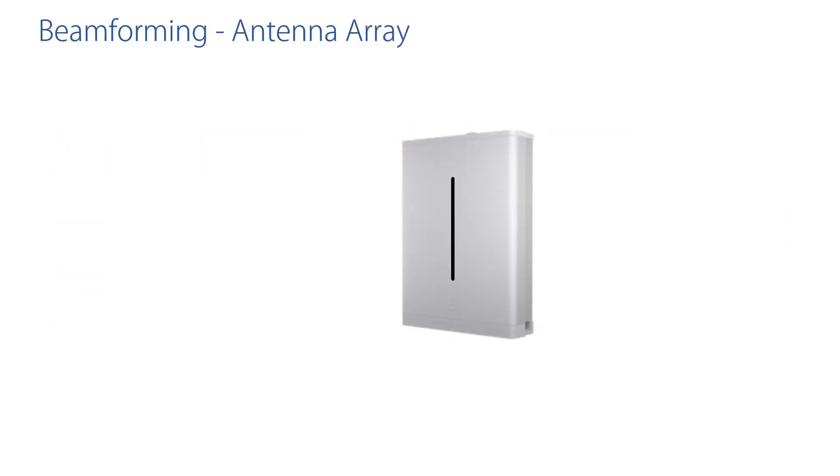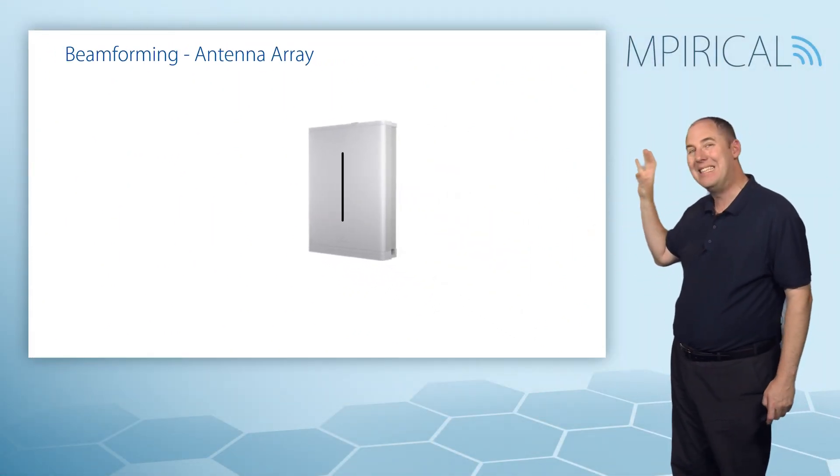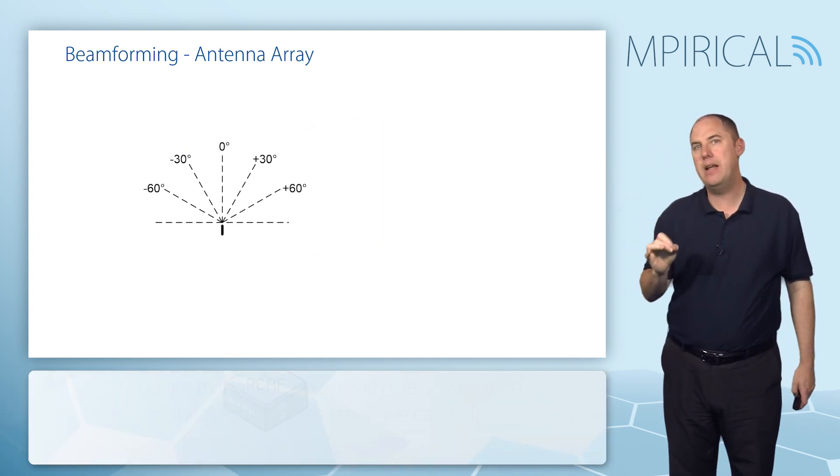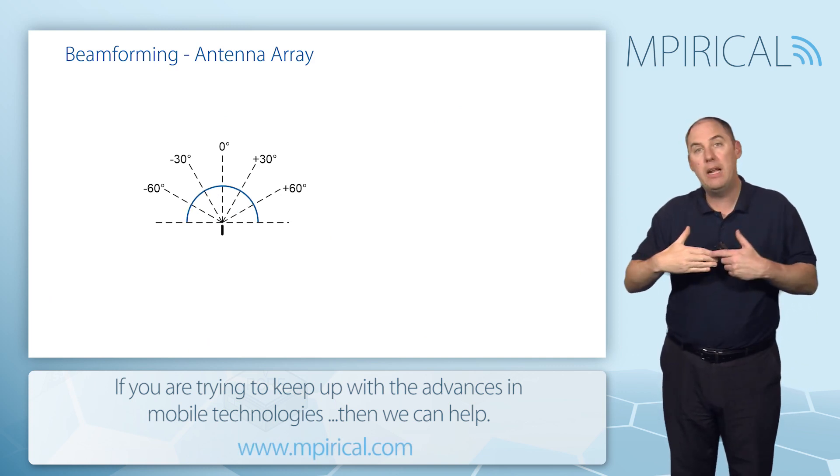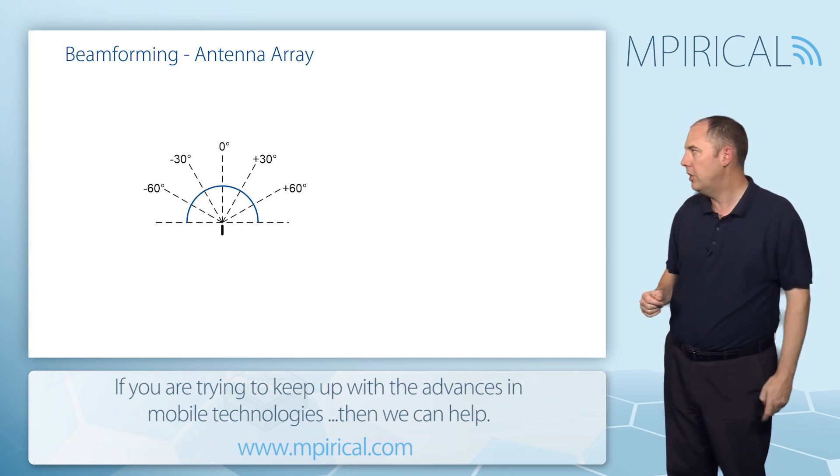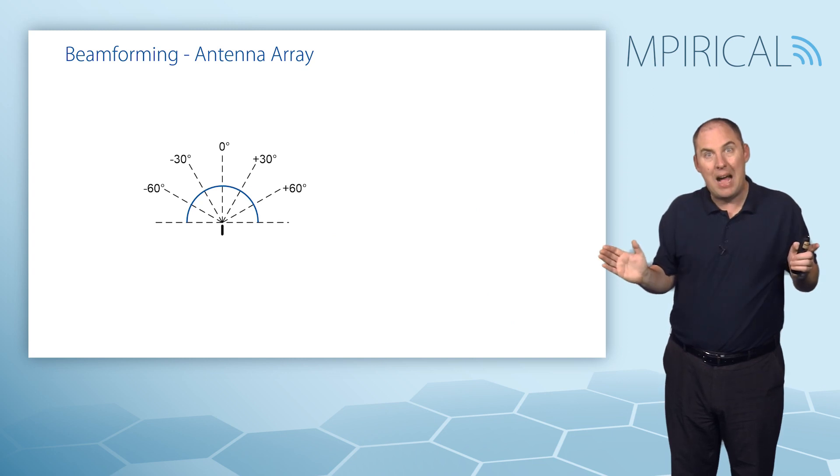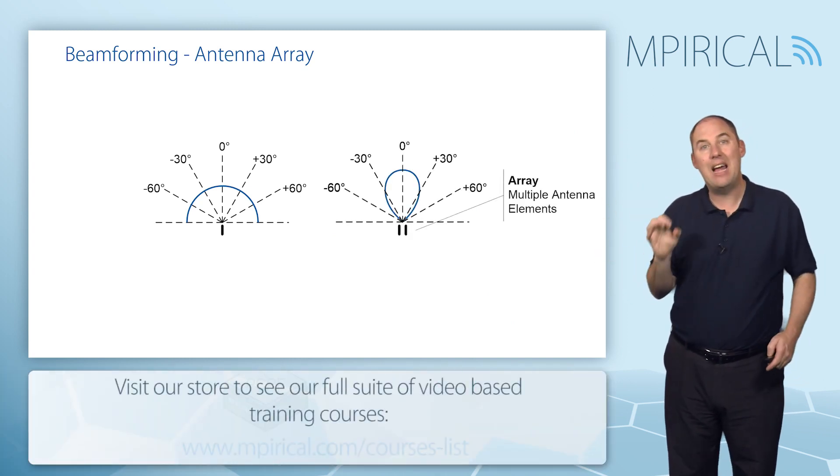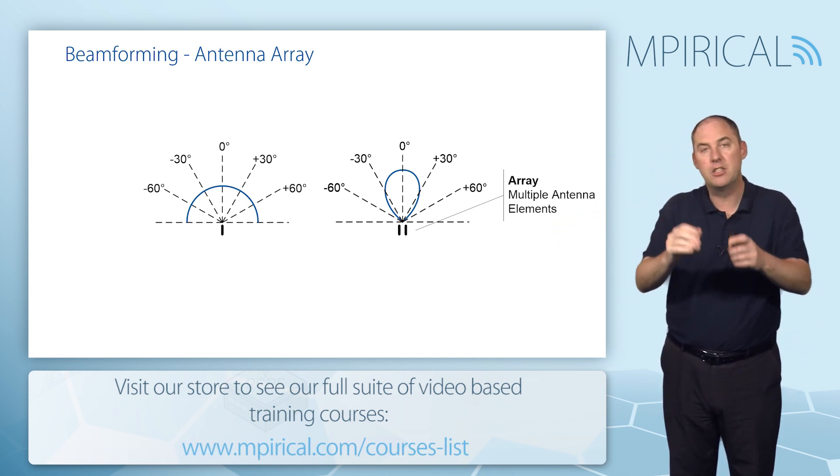Looking at an example of how do we create a beam: here I've got an antenna, a single antenna element. If we focus on this single antenna element, the energy that comes off that would typically go out in all directions, sort of in a 360 arc potentially. What we're talking about is trying to get the beam to be narrow. By adding more elements—so adding a second element here—it's going to have the effect of narrowing that beam, focusing the energy in a certain direction.